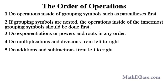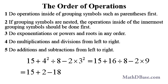5. Do additions and subtractions from left to right. Given this expression, square the 4 and 3 first, then do the division and multiplication, and then add and subtract from left to right to get negative 1.